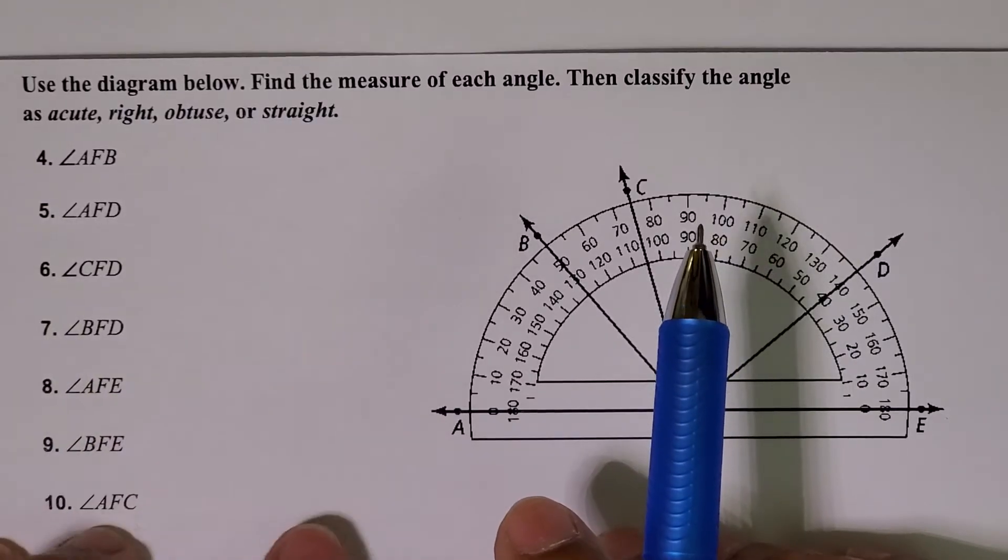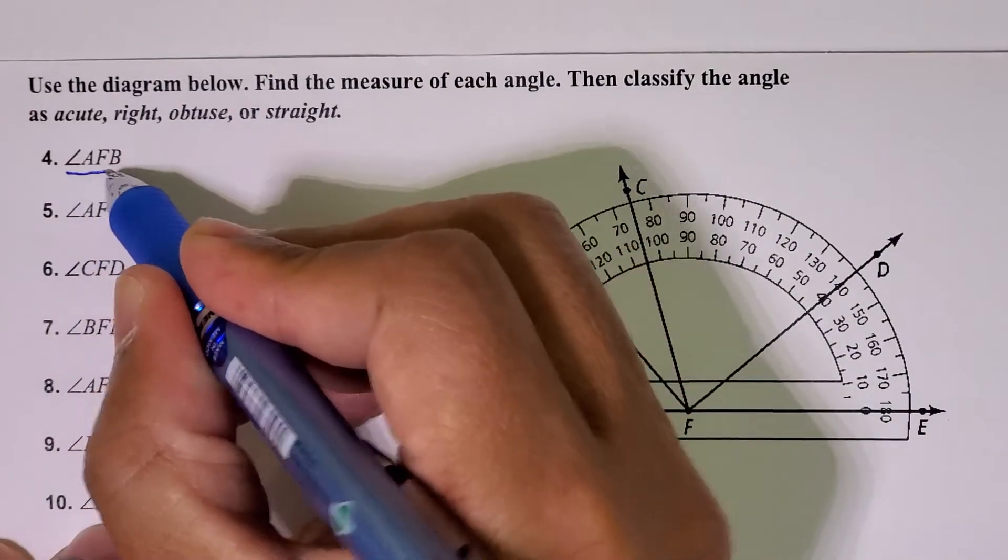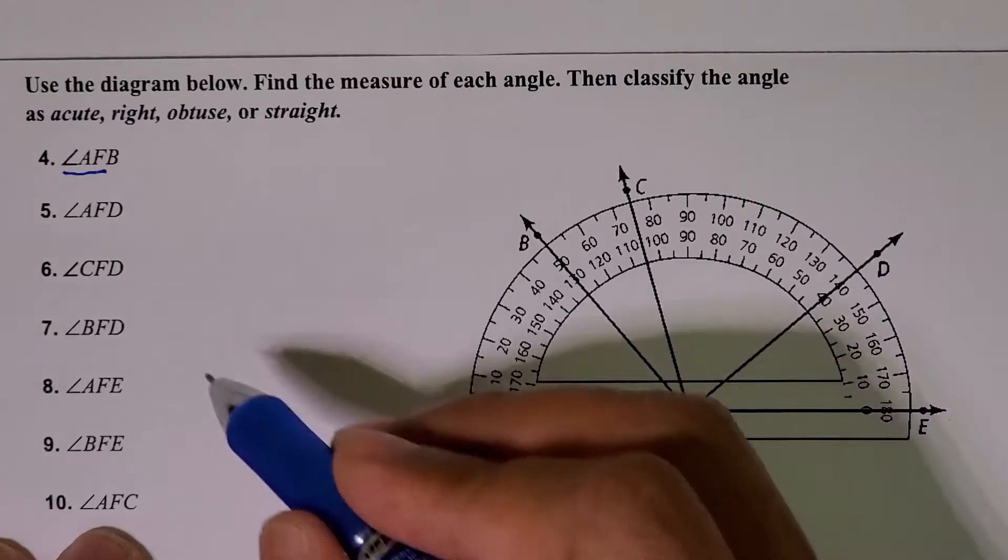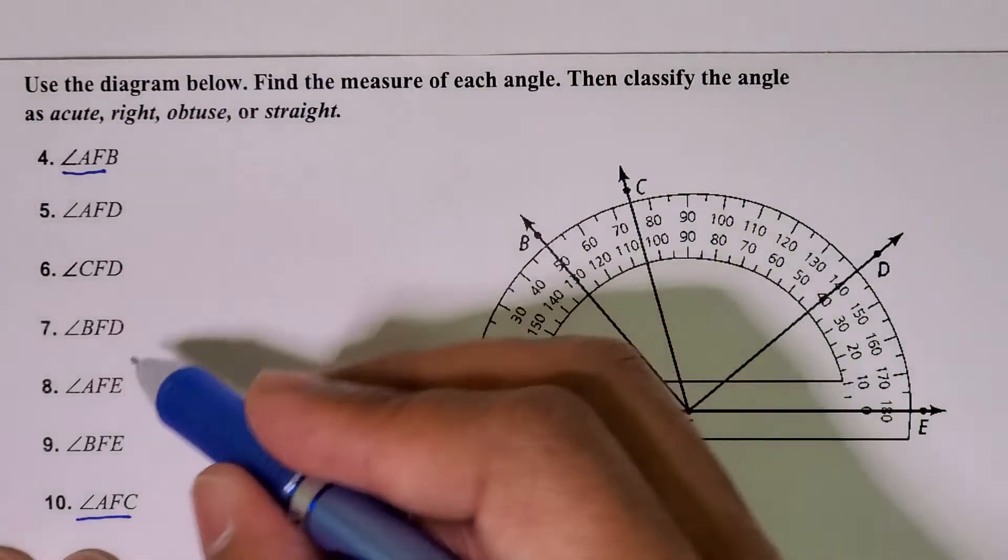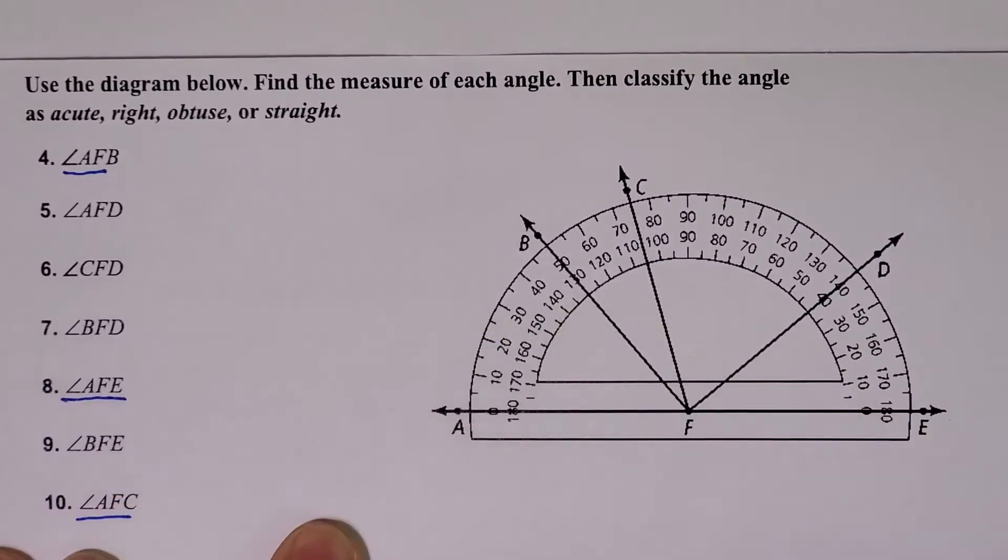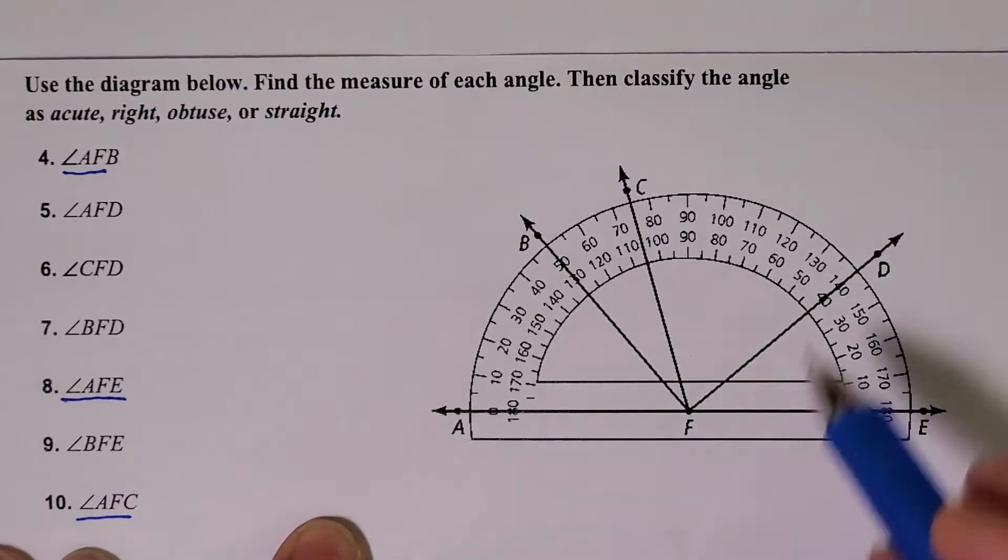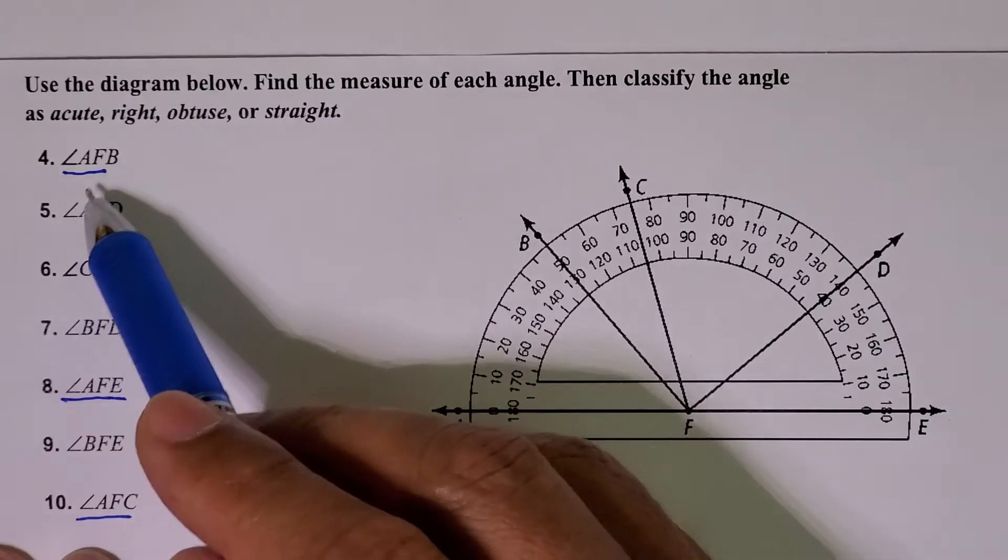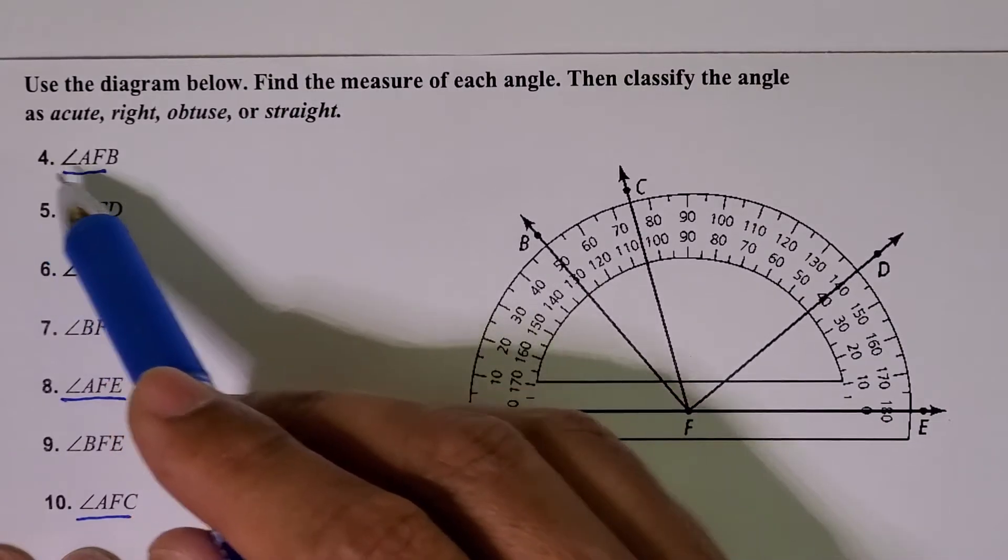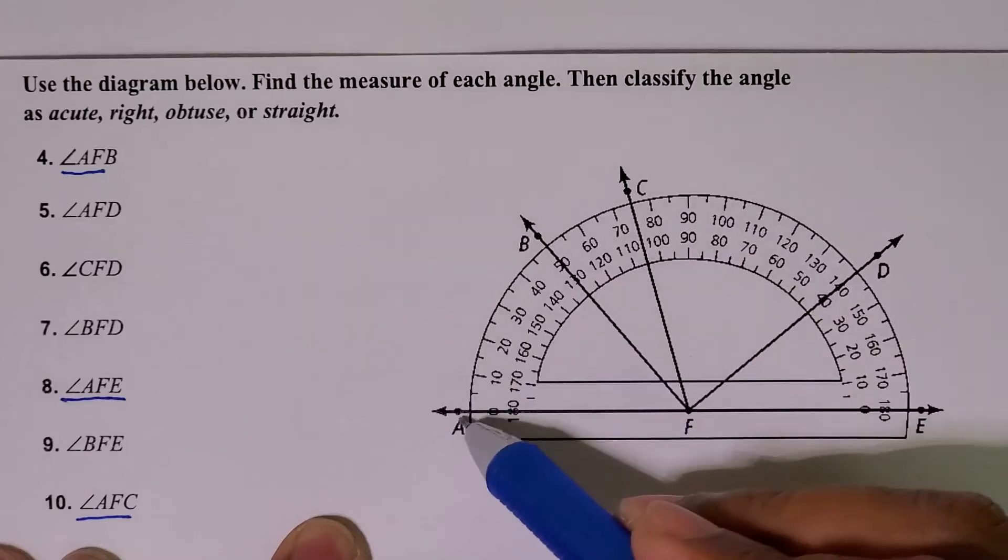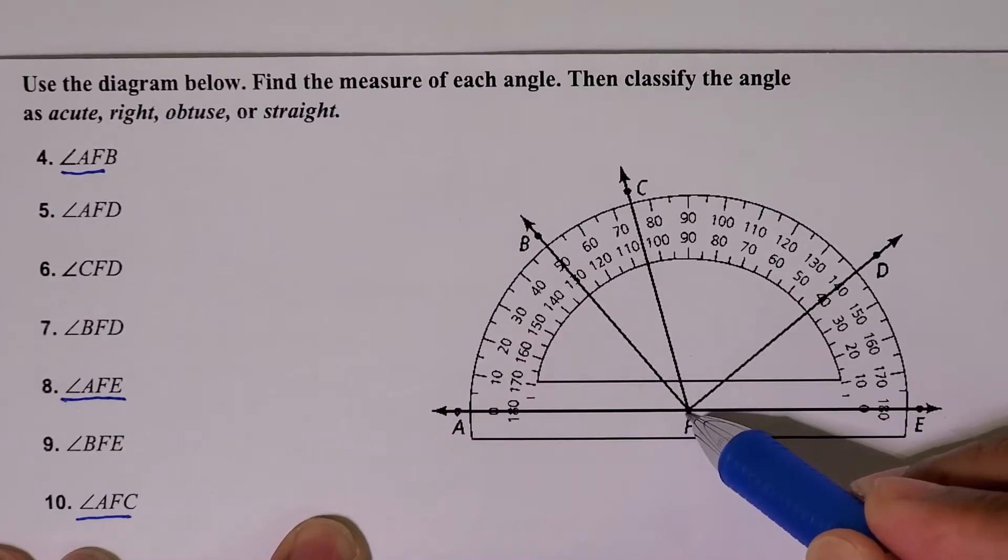I'm going to go over this one here and let's say number 10, and let's see AFE, and number 8. So to find the measure of each angle, let's start with angle AFB. So number 4, angle AFB. This is point A, point F is the vertex, and B is this point here, so that means we're talking about this angle.